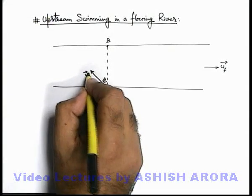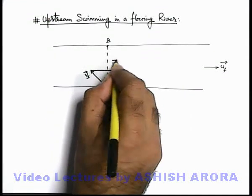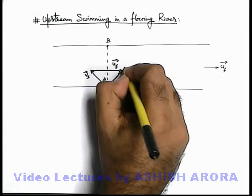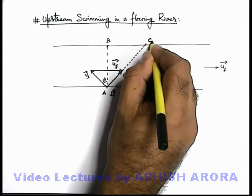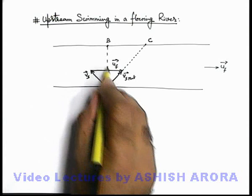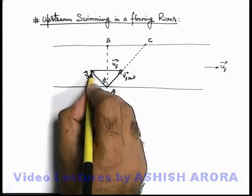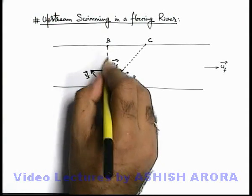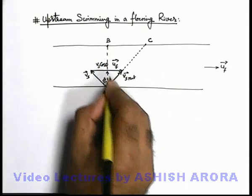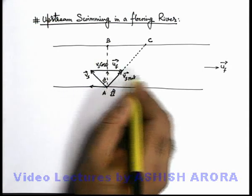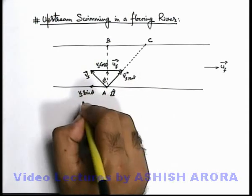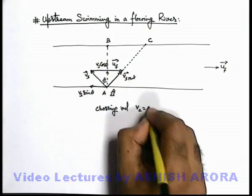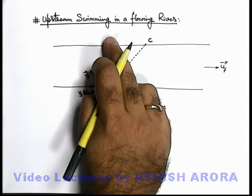In this situation, the flow velocity u_f is added to the swimmer's velocity, giving net velocity v_s_net — the direction in which the swimmer will actually move and reach point C. Analyzing the motion: when the swimmer jumps at speed v_s making angle theta with the normal direction, there is a perpendicular component v_s cos θ (crossing the river) and a component opposite to the river current, v_s sin θ. The crossing velocity v_c is again v_s cos θ.